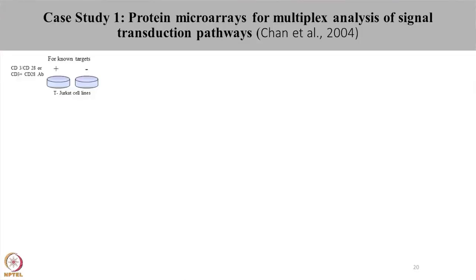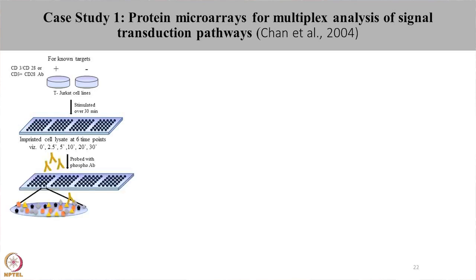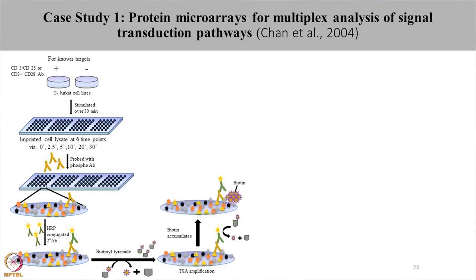Once they confirmed the experiment was working, Jurkat T cell lines were treated with CD3 antibody, CD28 antibody, or CD3 and CD28 antibody in combination. Cell lines were stimulated over 30 minutes and cell lysates were imprinted at 6 different time points: 0, 2.5, 5, 10, 20, and 30 minutes. These cell lysates were probed with phospho-antibodies to look for phosphorylation status, then incubated with HRP-conjugated secondary antibodies. Tyramide amplification was performed in which HRP catalyzes accumulation of biotinylated tyramide.